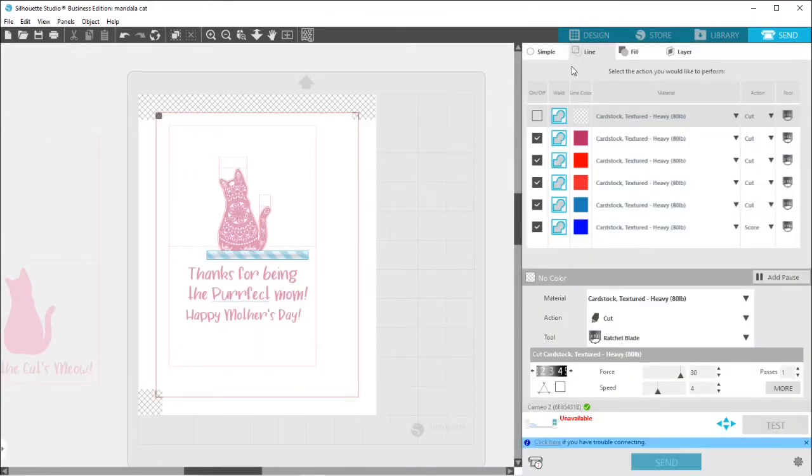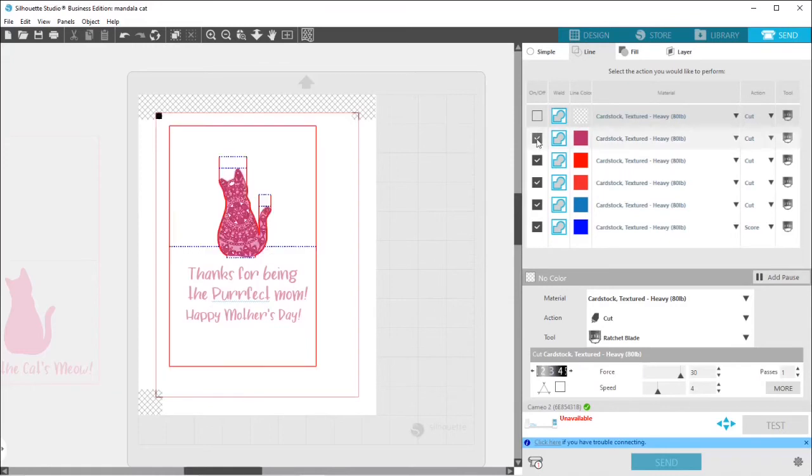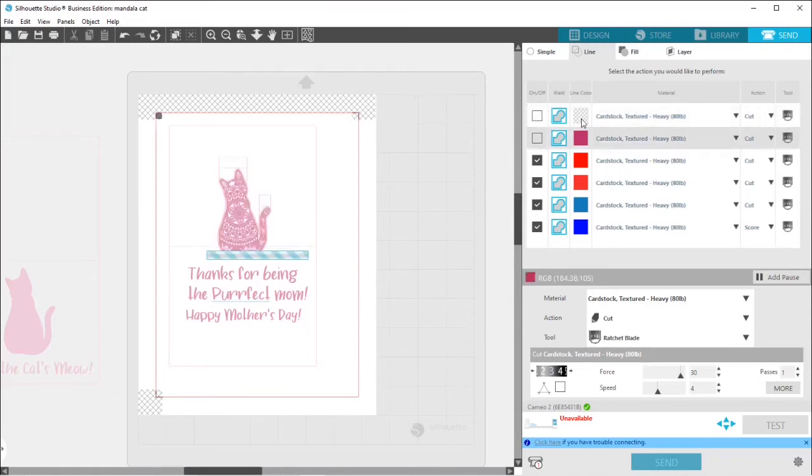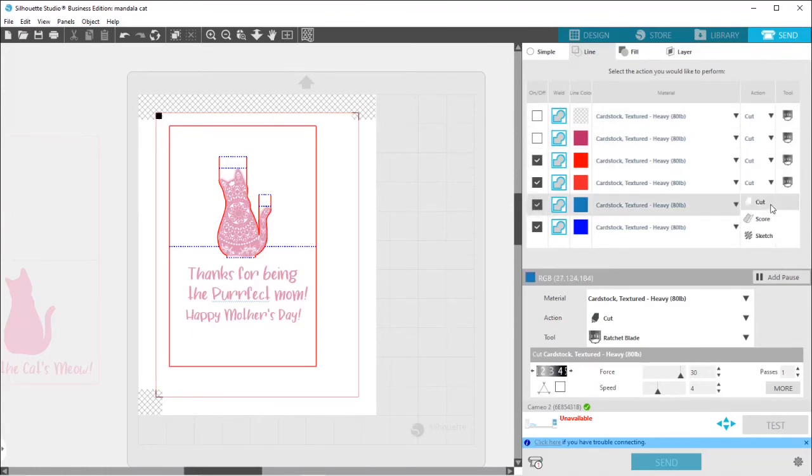And then when you go to the send panel to cut everything out, you want to cut by line color. So I don't want to cut purple and I don't want to cut anything that does not have a line color. And then, my blue lines are going to be my score lines. And my red lines are my cut lines. And that way, everything is ready to roll. And then I will show you what it looks like once everything is printed and cut out.